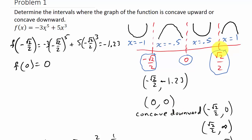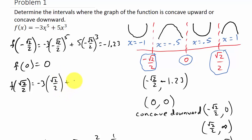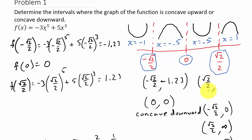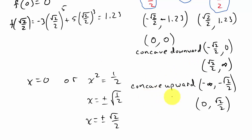The third inflection point is at x equal square root of 2 over 2. F of square root of 2 over 2 equals negative 3 times (square root of 2 over 2) to the fifth plus 5 times (square root of 2 over 2) cubed, which gives positive 1.23. So the inflection point is (square root of 2 over 2, 1.23). There are your inflection points and the intervals where the graph is concave up and concave down.